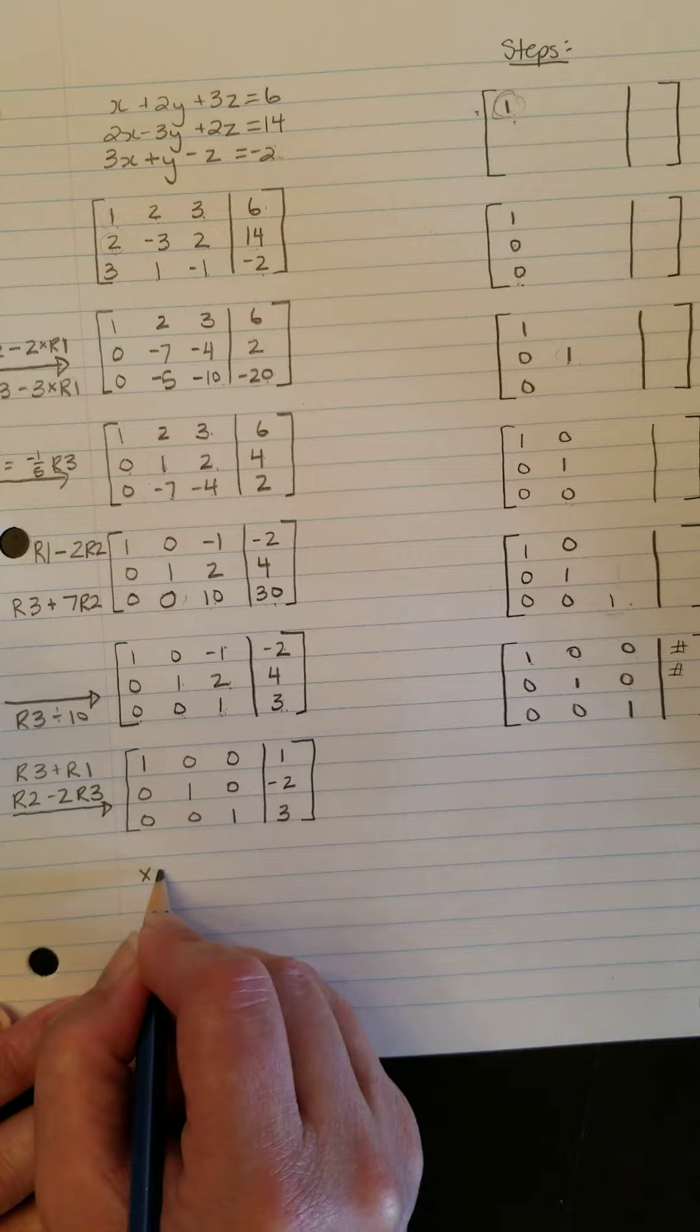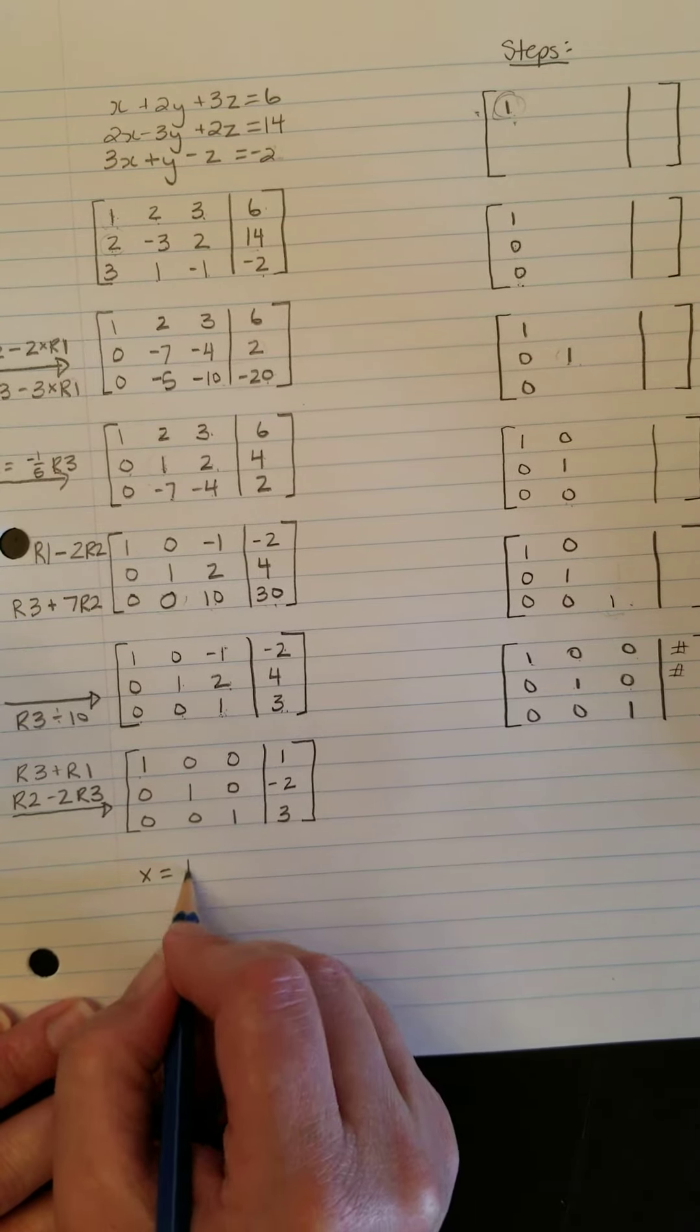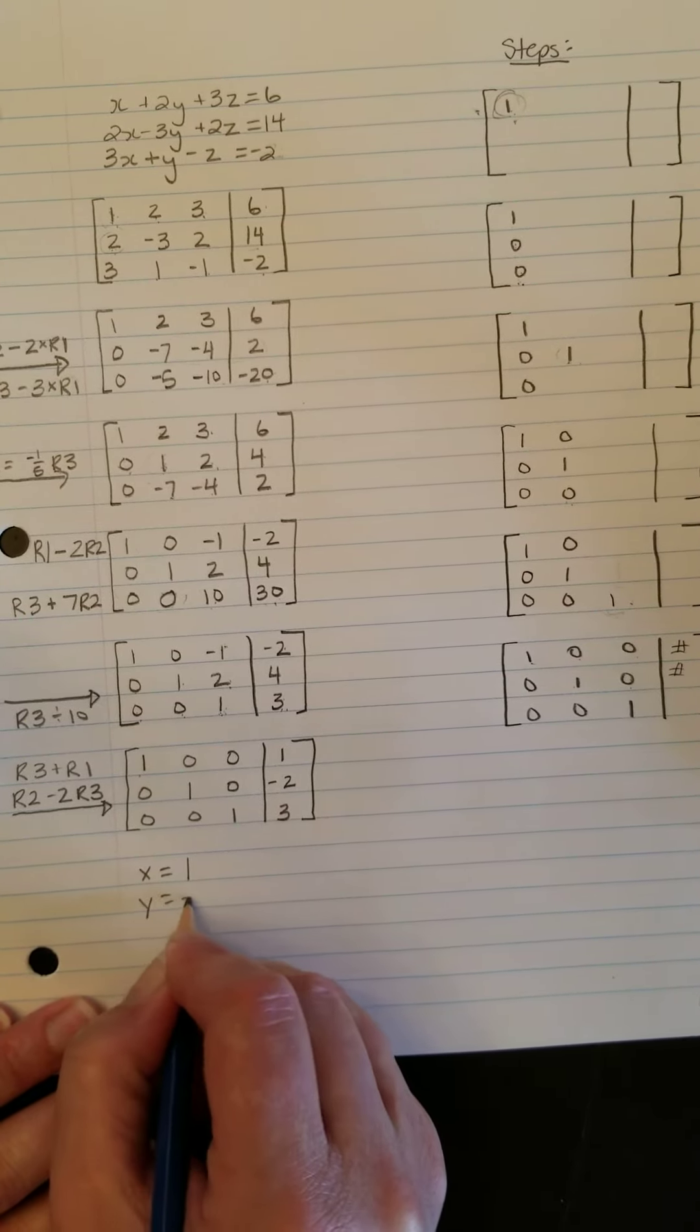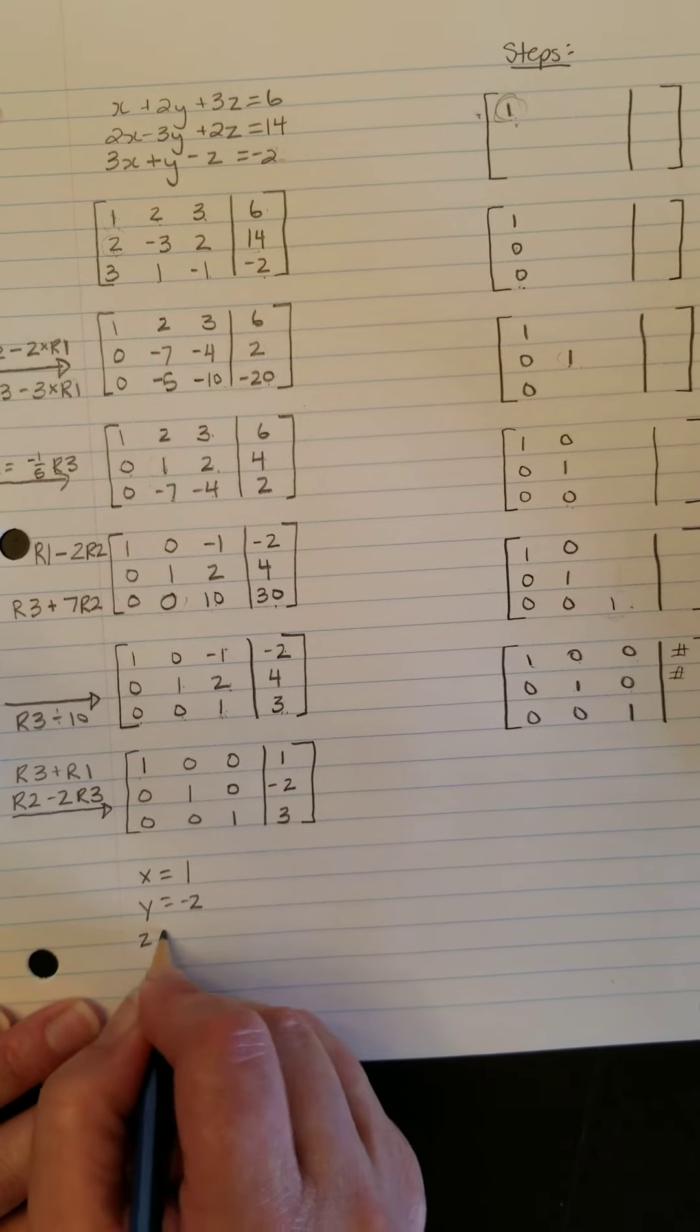So we see that the system of equations gives us 1x equals 1, y is negative 2, and z is 3.